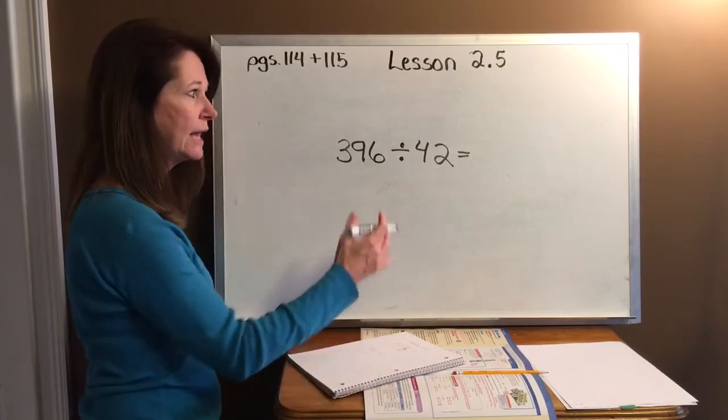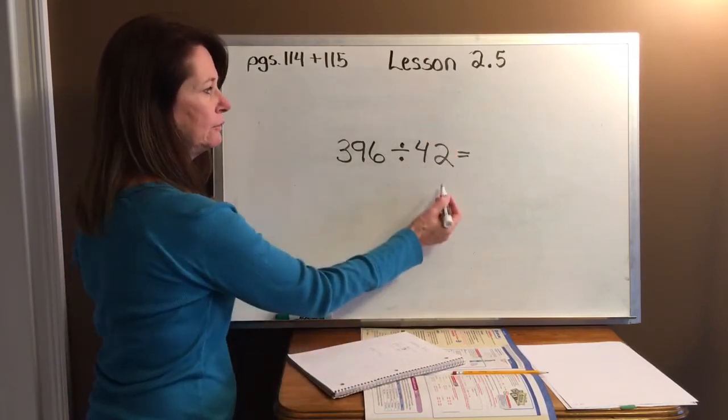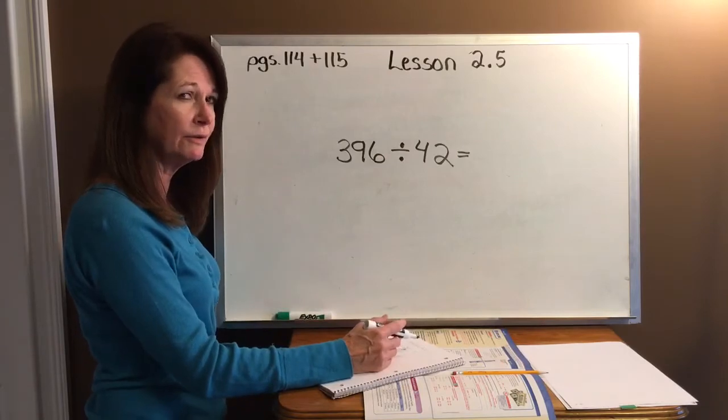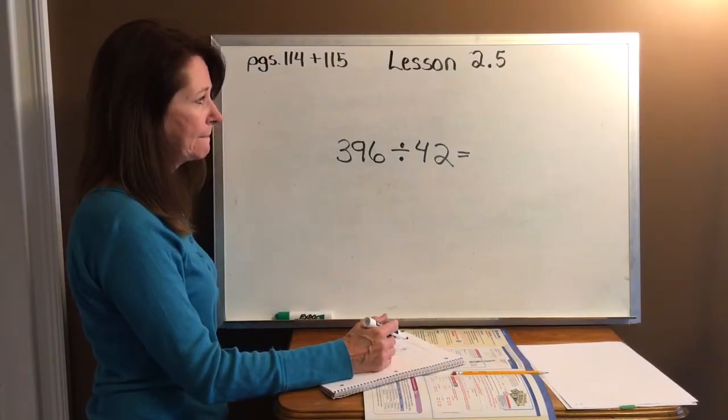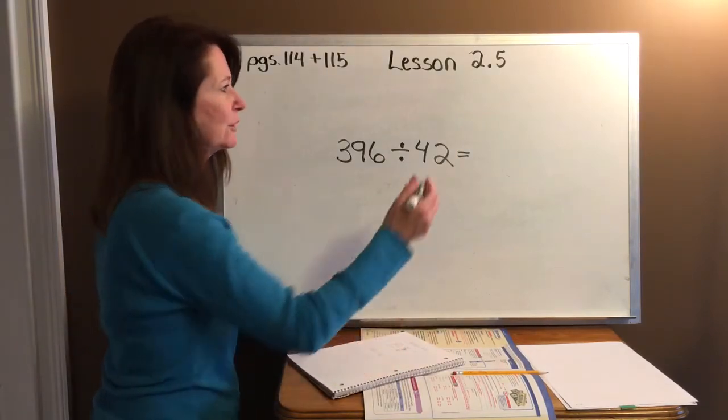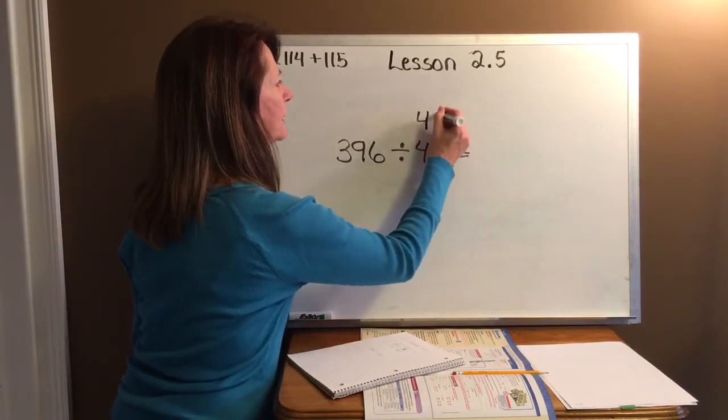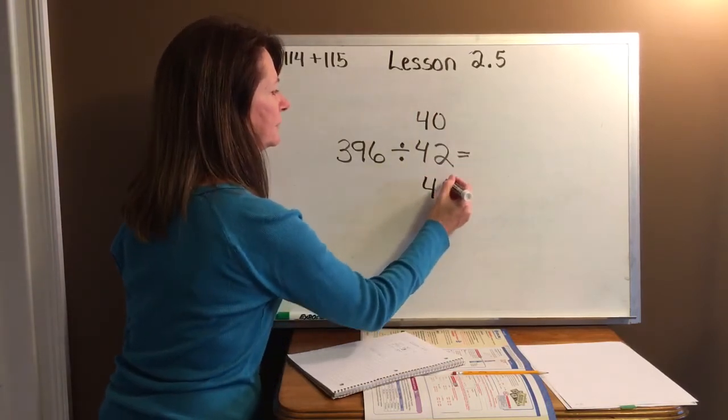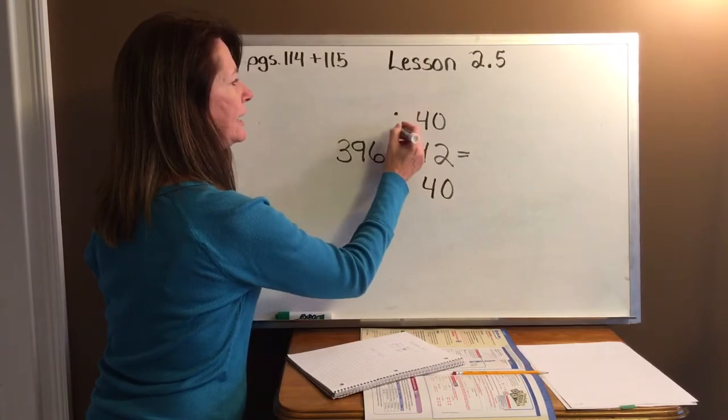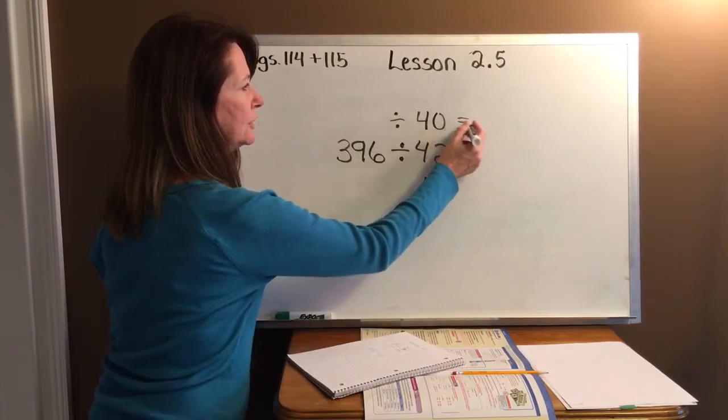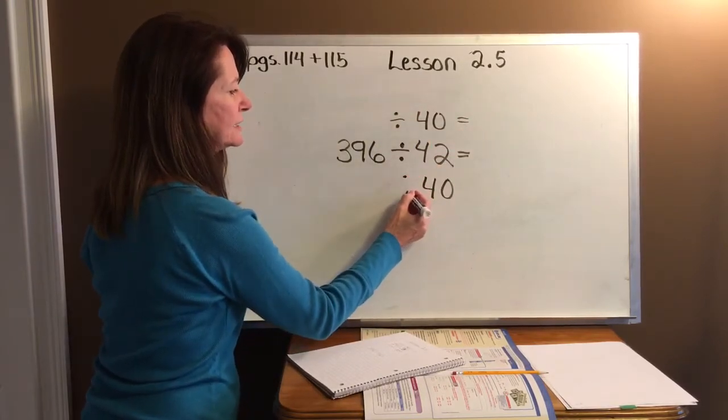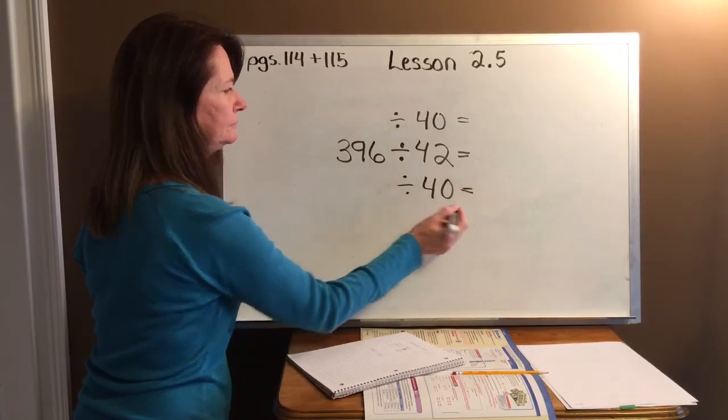So here we have 42. Remember the first thing we did? We're going to estimate 42, and it's either going to be 40 or 50. Think about it. Go ahead. You could write it down right now. Write it up here and write it down below. Is it 40 or is it 50? It's 40. So we're going to go ahead and put 40 up here and 40 down here.